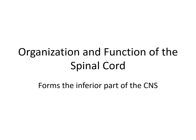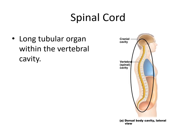The central nervous system is composed of the brain and the spinal cord, and the spinal cord forms the inferior part of the central nervous system. The spinal cord is a long tubular organ located in the vertebral canal. It fills the vertebral foramen. This yellow part here is the vertebral or spinal cavity, also called the dorsal body cavity because in animals on all fours, it'll be dorsal.